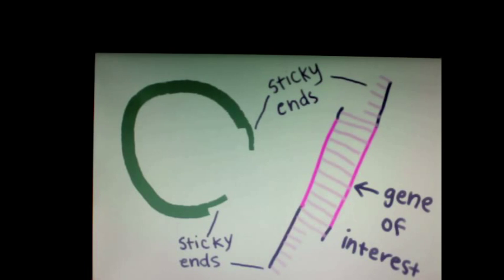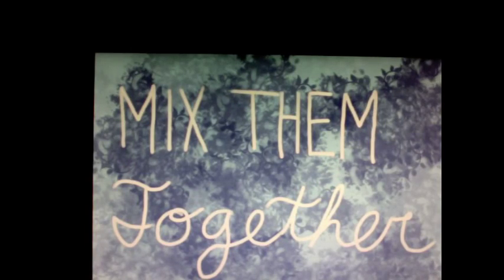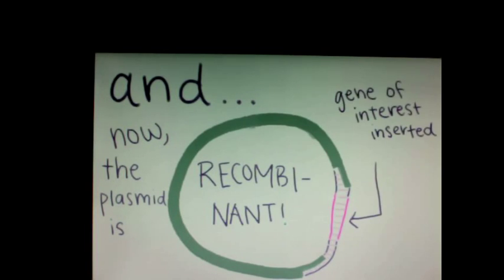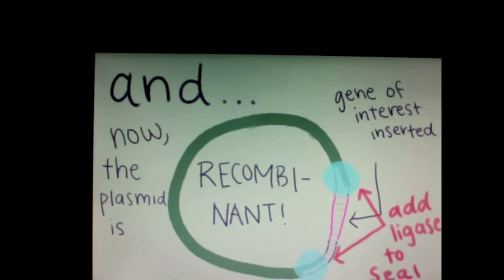The cut plasmids and DNA fragments are then mixed together so the complementary strands can base pair. Now the plasmid is recombinant — meaning containing DNA from two or more organisms. To seal the sticky ends, DNA ligase is added. And thus, a recombinant plasmid is made holding the gene of interest.